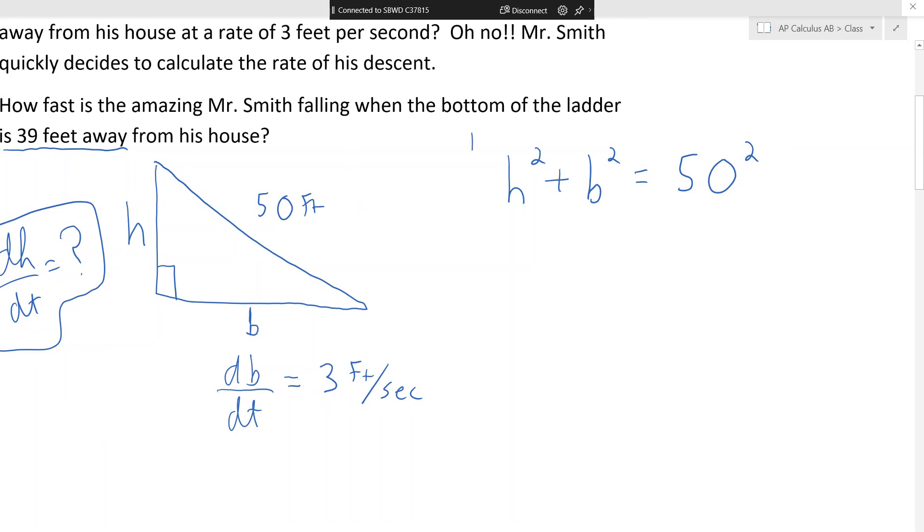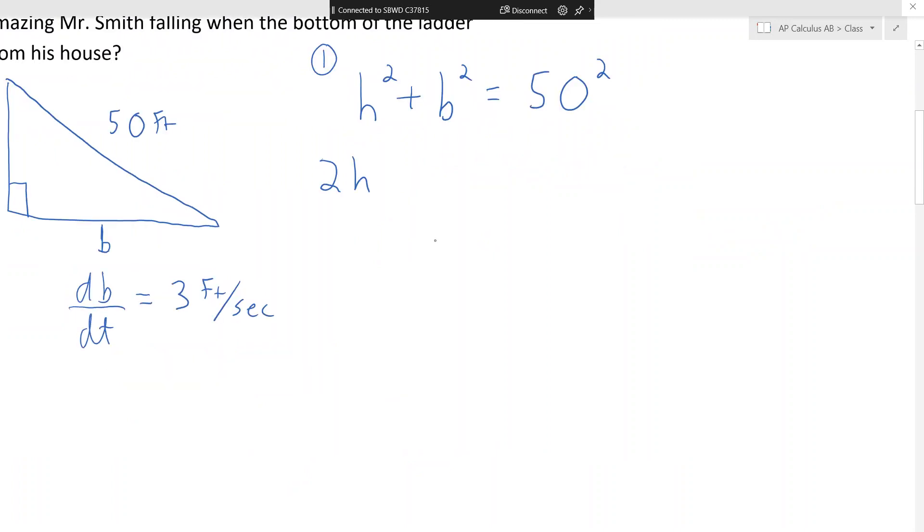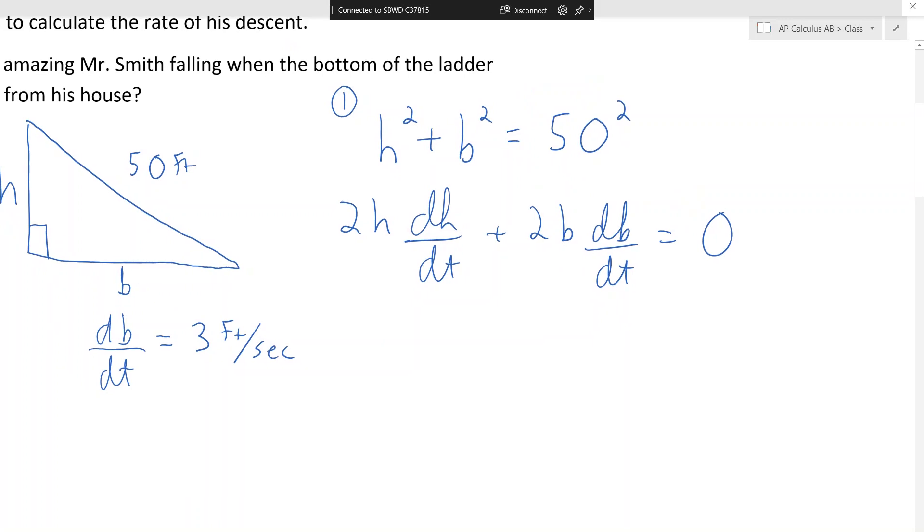Now this equation here is not going to help us find dh/dt. dh/dt is not even in this equation. H and B are in this equation. So if I know B, I can find H. If I know H, I can find B. That's what that equation is for. But if I derive it with respect to time, I'm going to get dh/dt to pop up. So that's our first goal, right, to get an equation that has what we want in it. So we derive it. We get 2h dh/dt plus 2b db/dt, and that's going to equal zero.